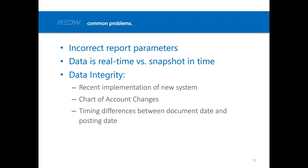When looking at data from different software systems, make sure you're looking at the same time period — whether real-time or a snapshot in time. A snapshot report like a balance sheet or trial balance captures a point in time. For a real-time report, make sure everything is posted and all data is in. If you have third-party software connected to your system or are importing data from other systems, make sure those imports are completed before extracting data from your main system.